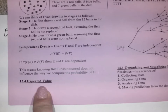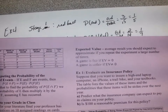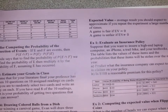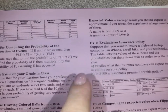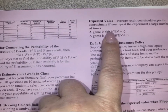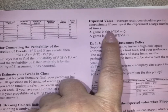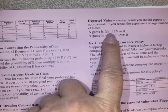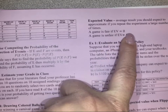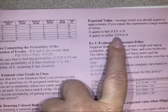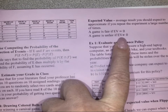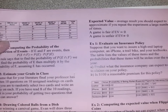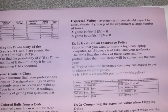We're going to look at expected value. The expected value is the average results you should expect to approximate if you repeat the experiment a large number of times. A game is fair if the expected value equals zero, and a game is unfair if the expected value does not equal zero.